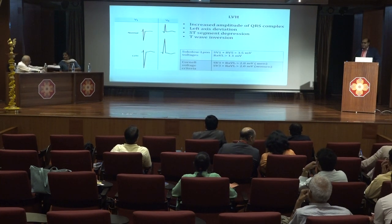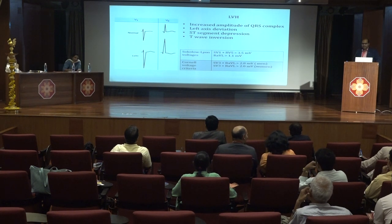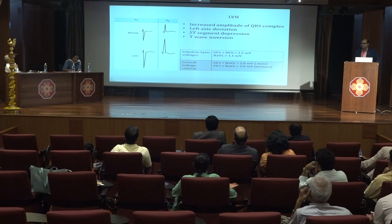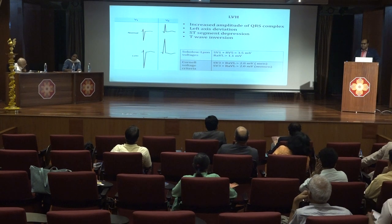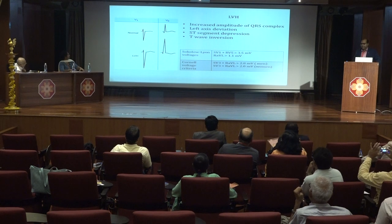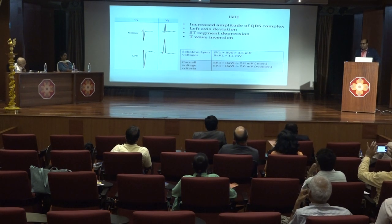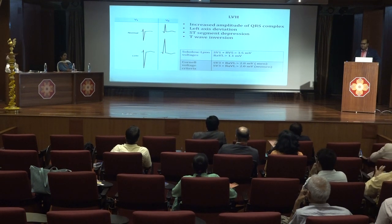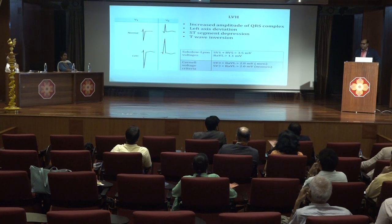The LVH criteria on ECG include a deep S wave in leads V1 and V2, and tall R wave in leads I, AVL, V5, and V6. There may be left axis deviation, ST segment depression, and T wave inversion. The ST segment typically either is flat or slopes downward from a depressed J point, and the T wave is asymmetrically inverted. The commonly used Sokolow-Lyon criteria states that the sum of the S wave in V1 and R wave in V5 should be more than 3.5 millivolts, and R wave in AVL should be more than 11 mm.